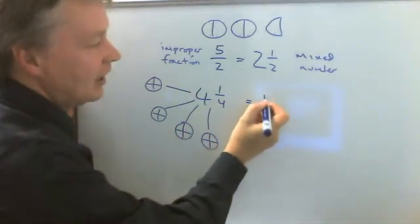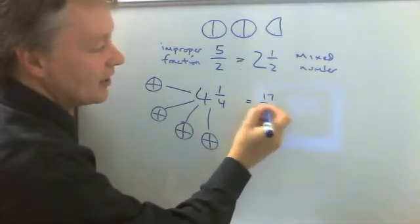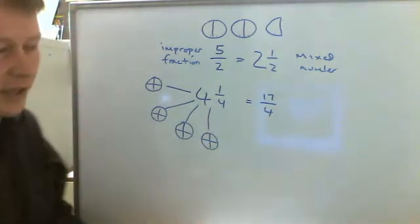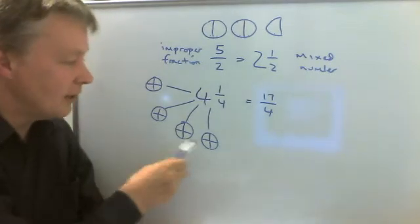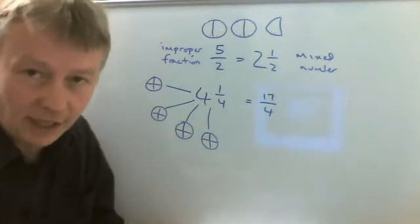So that would be an equivalent of seventeen quarters, an equivalent improper fraction. Practically speaking you wouldn't necessarily want to draw the pizzas out each time.